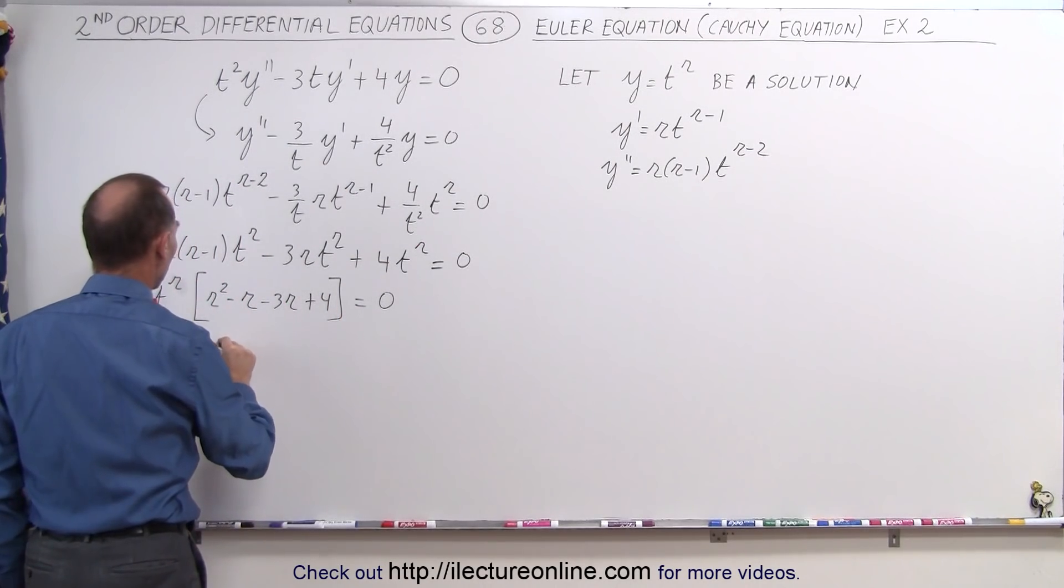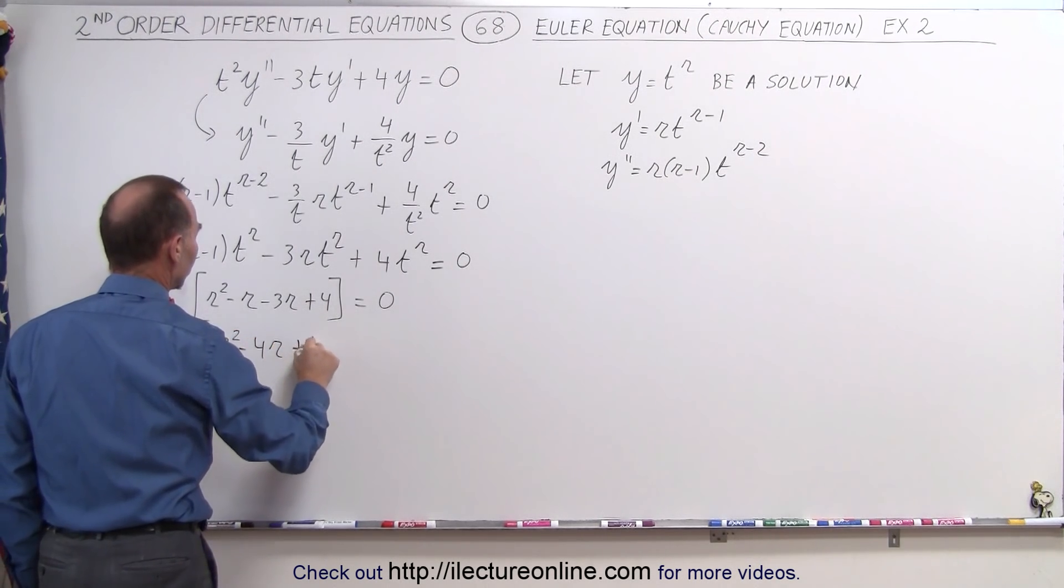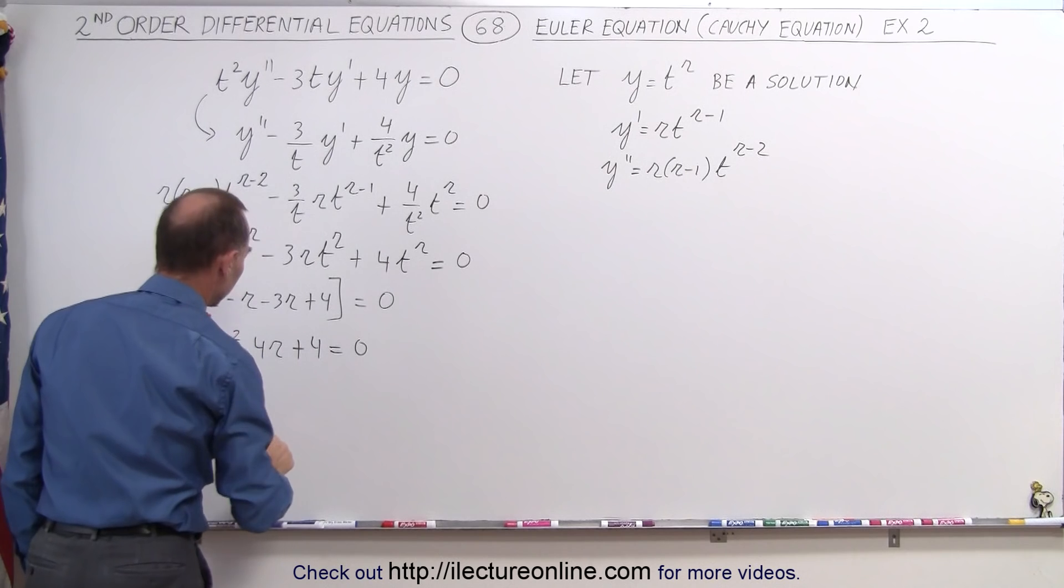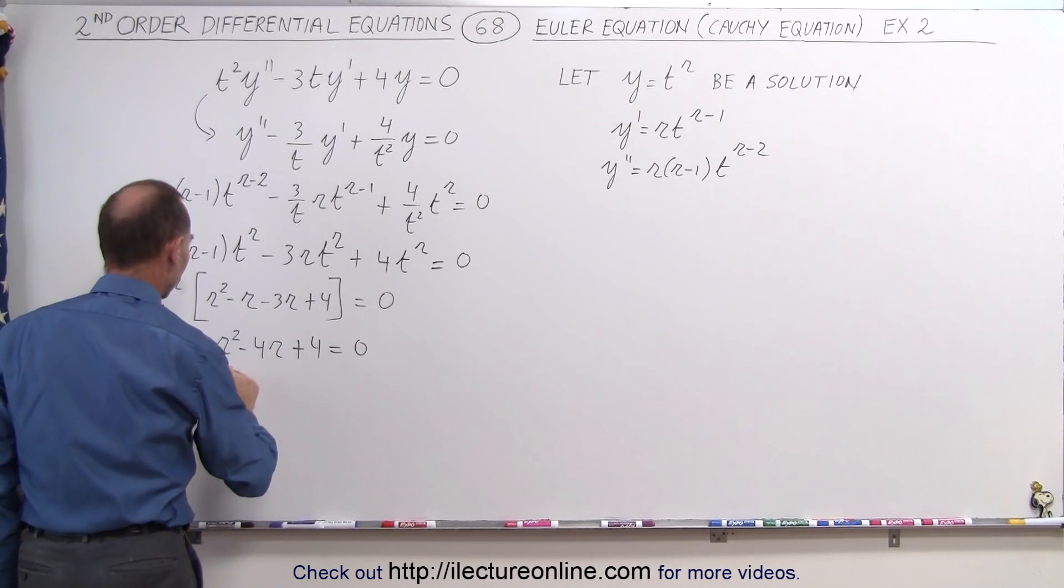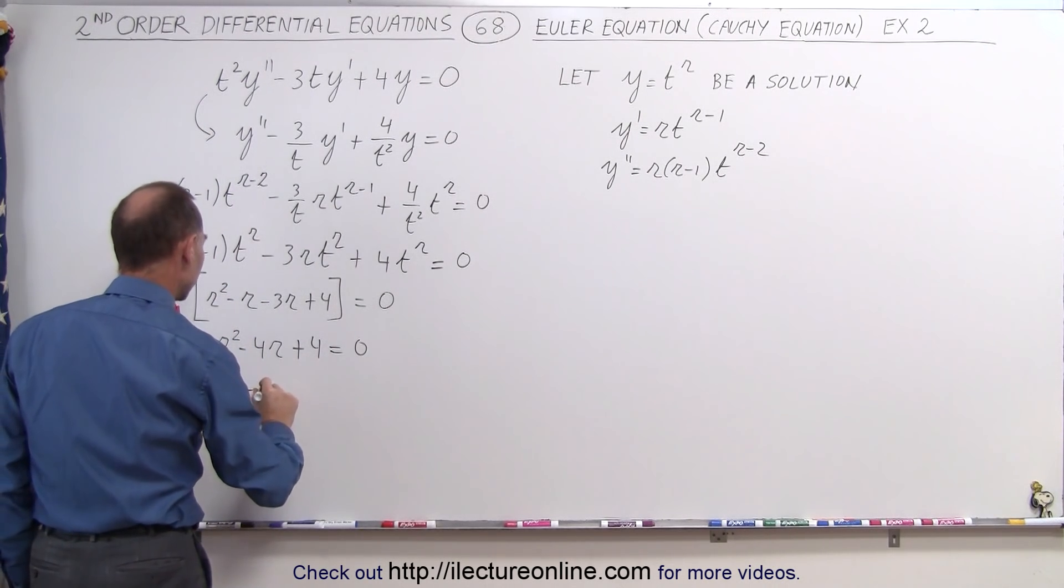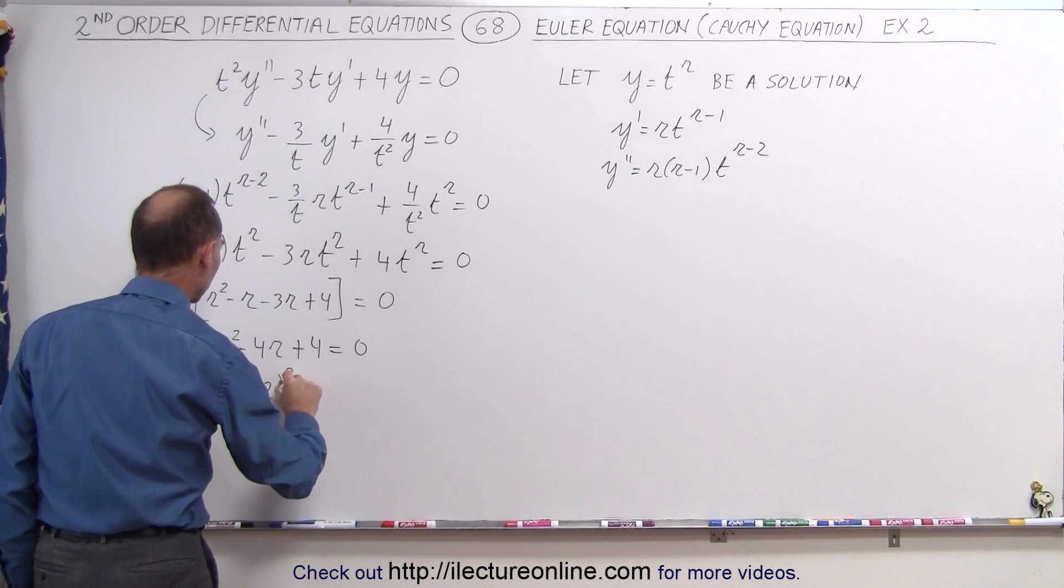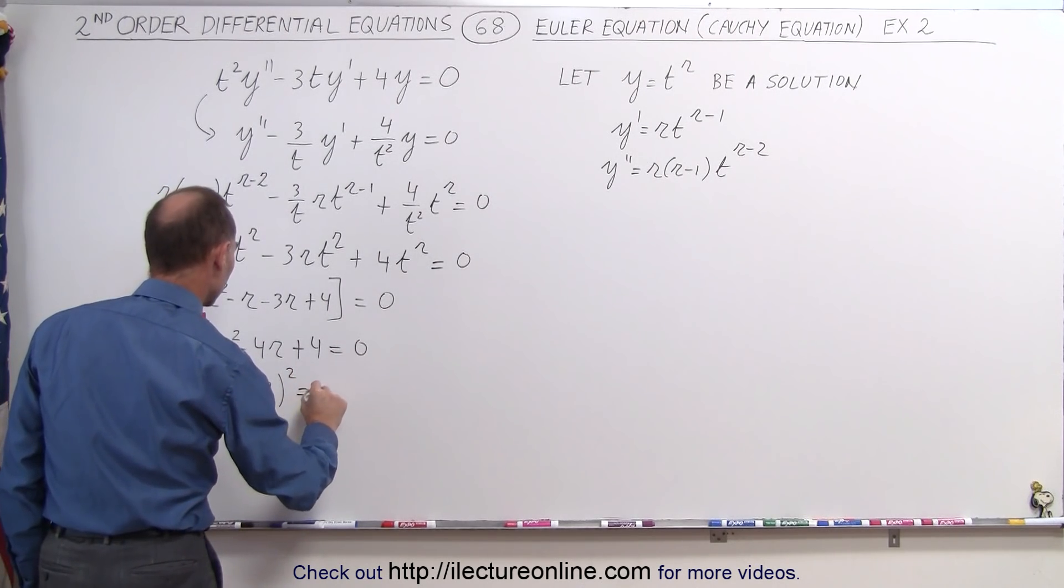Simplifying this, we get r² - 4r + 4 = 0. Now we can factor this. So we have (r - 2)² = 0.